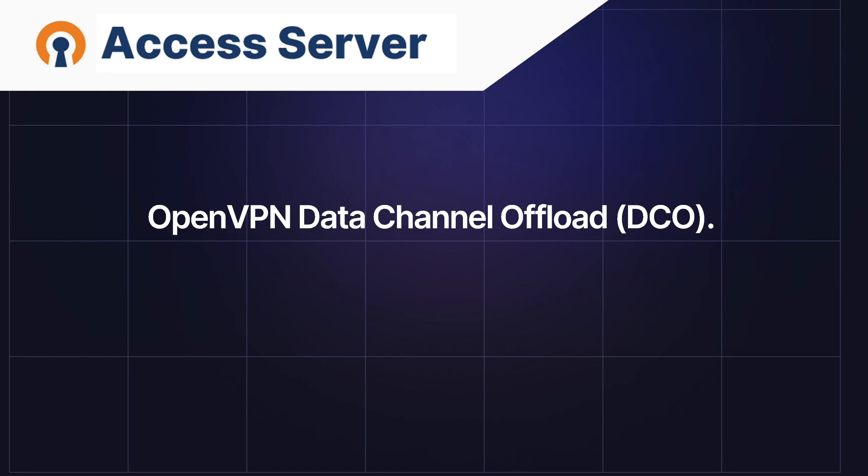OpenVPN has just introduced a new feature that will increase the speed for its users by moving the data channel to the kernel space. We call it OpenVPN data channel offload, or OpenVPN DCO. But before we start, let's see what kernel space and user space are, and what data channel means.